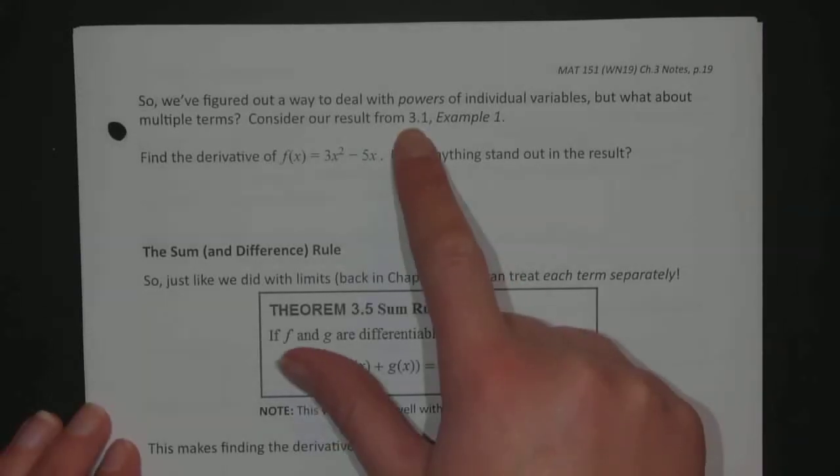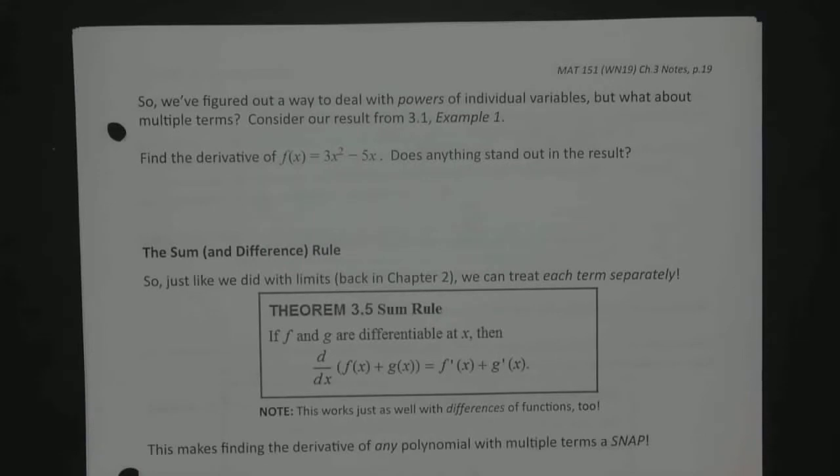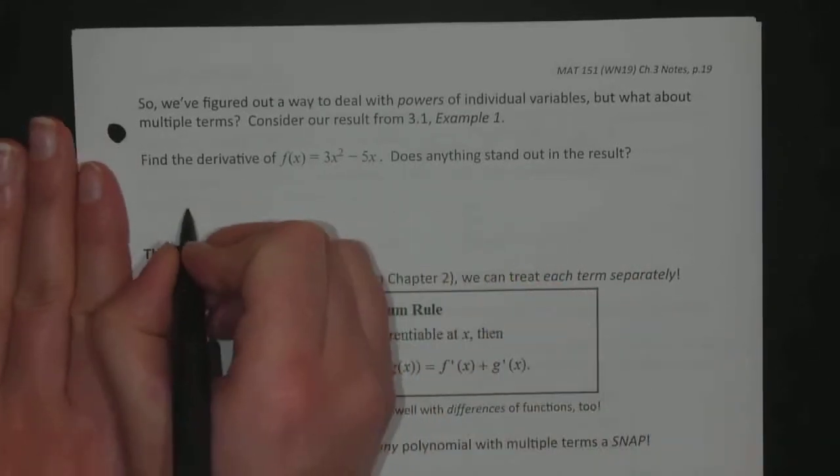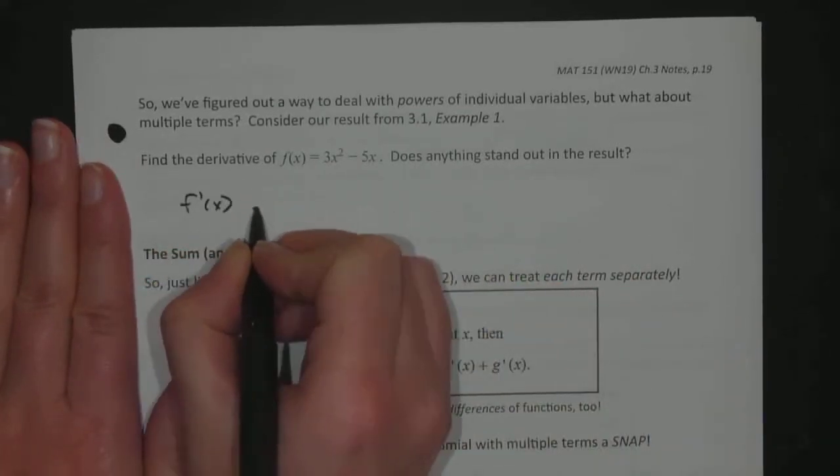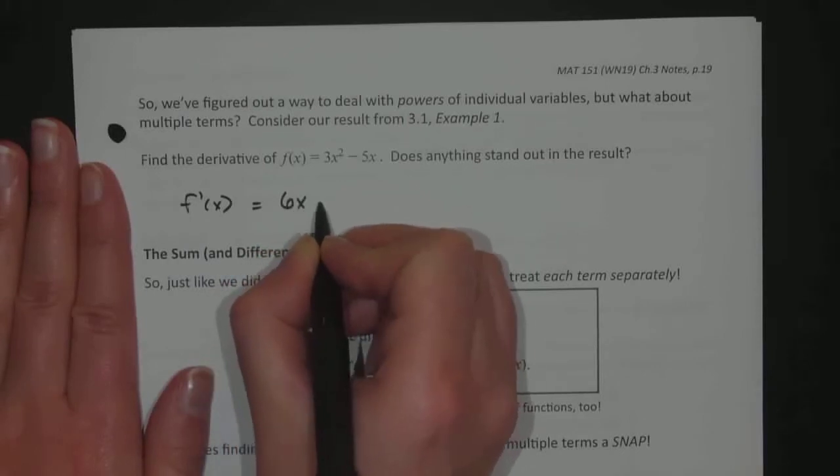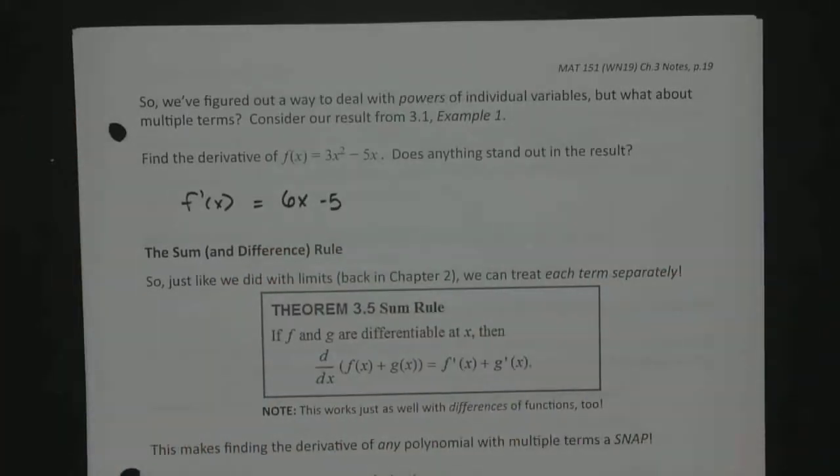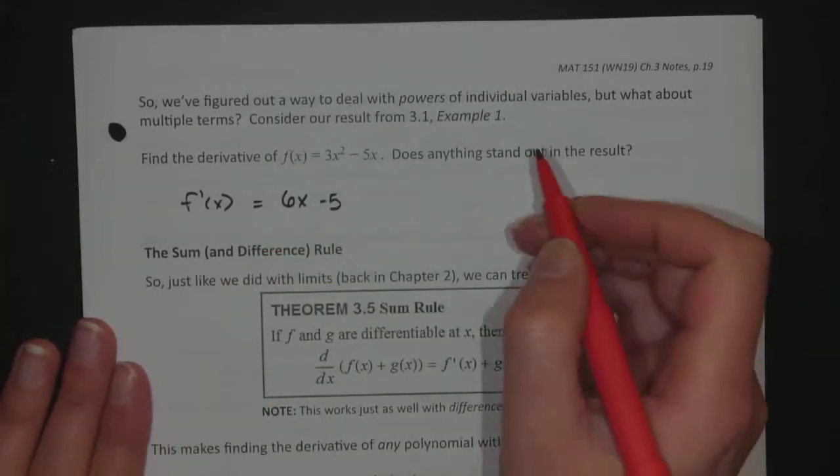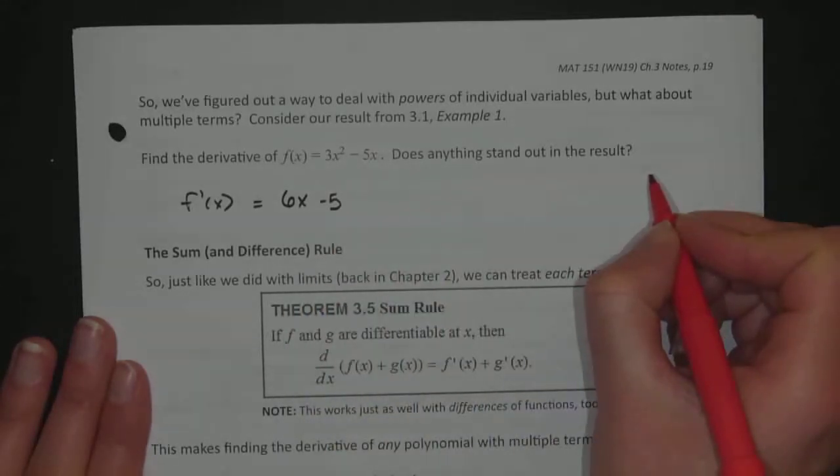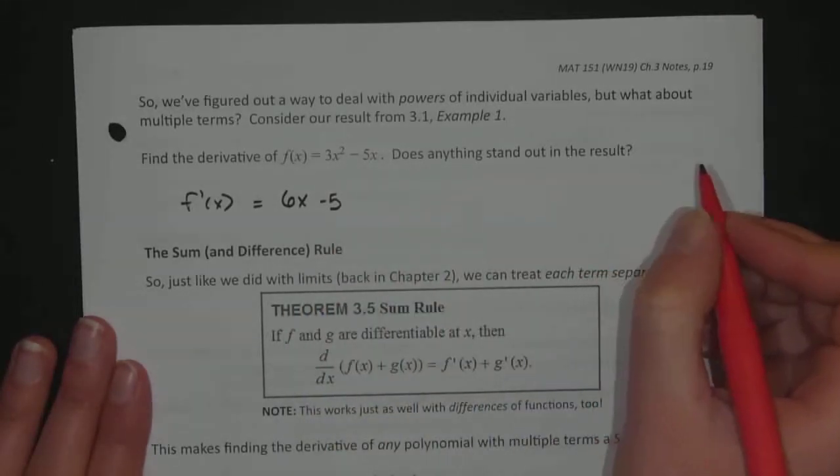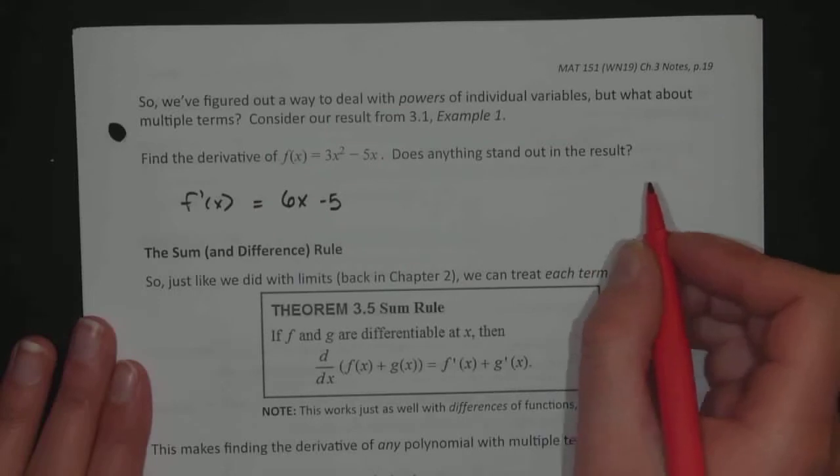What do I do if I want to find the derivative of 3x squared minus 5x? Does anything stand out in the result? If you look back at your 3.1 notes, we found that the derivative was 6x minus 5 in that example. And our question: does anything stand out in the result?